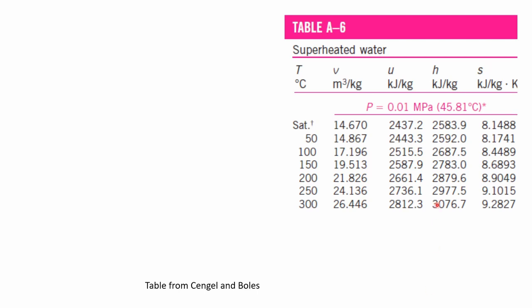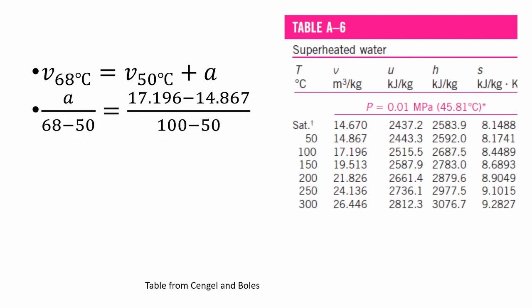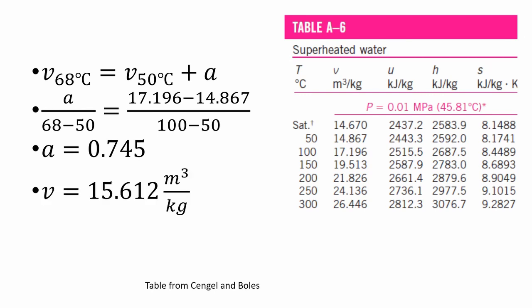We can now use the superheated steam tables to determine the specific volume, looking at the superheated water table at a pressure of 10 kPa. For our case, where we want to know the specific volume at 68 degrees Celsius, that value is not shown on the tables — it falls between 50 and 100 degrees — which means we need to use interpolation to get the specific volume at 68 degrees Celsius. Through interpolation, we get the value of A as 0.745, and we calculate the specific volume at 68 degrees Celsius as 15.612 cubic meters per kilogram.